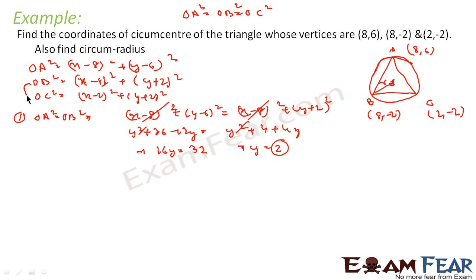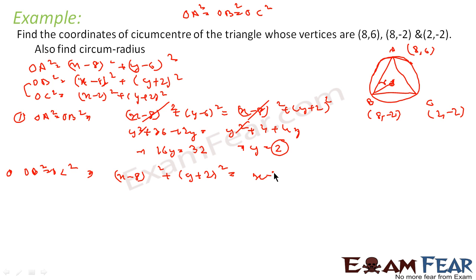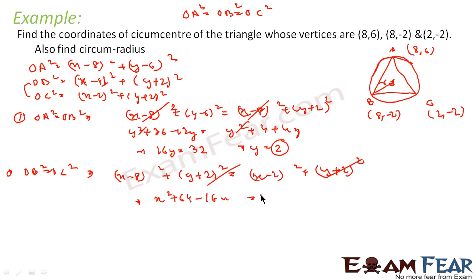To find X, equate OB² = OC²: (X−8)² + (Y+2)² = (X−2)² + (Y+2)². The (Y+2)² terms cancel, leaving (X−8)² = (X−2)², which gives X² + 64 − 16X = X² + 4 − 4X. So 12X = 60, giving X = 5.